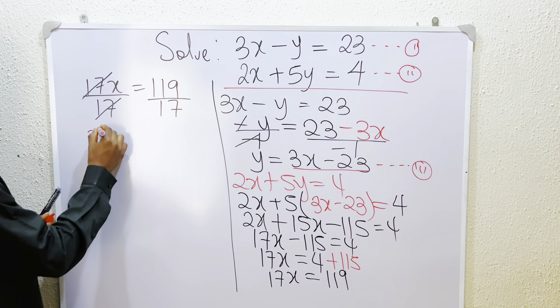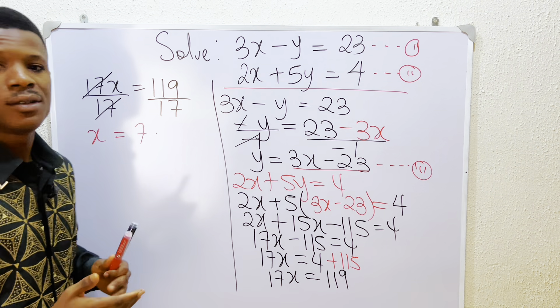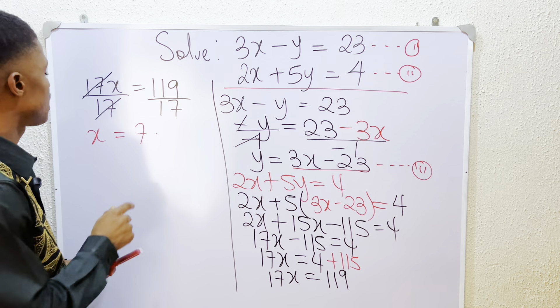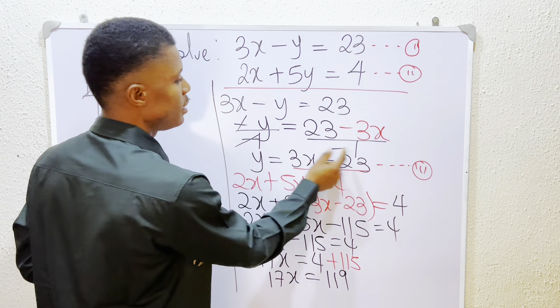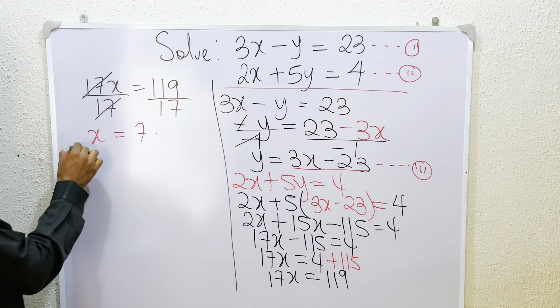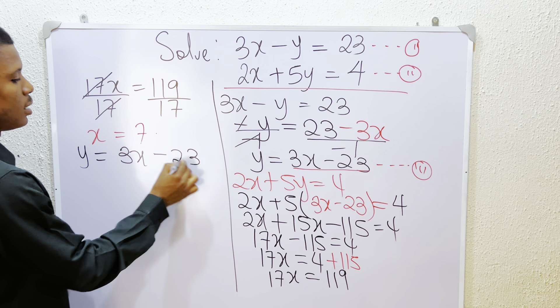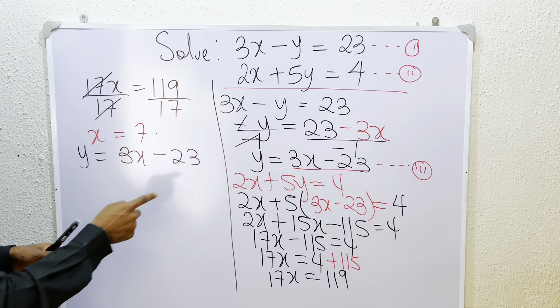So for us to get the value of y is simple. We just have to put x to be 7 in the equation 3 we have. You remember we've agreed that y is equals to 3x minus 23 from equation 3.